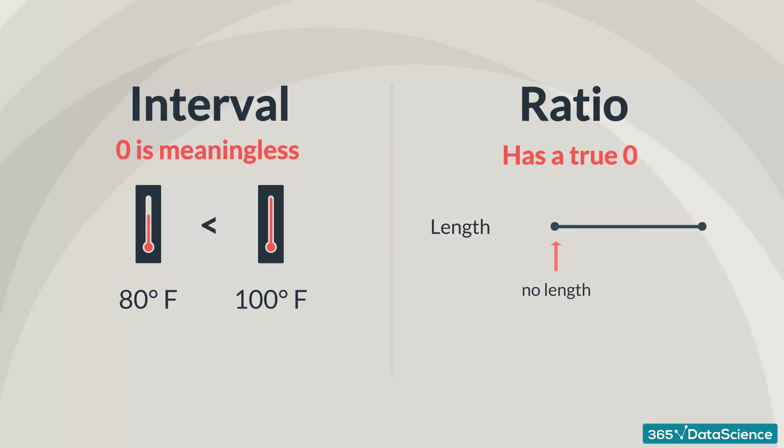Continuing this temperature example, there is another scale: Kelvins. According to it, the absolute minimum temperature is zero degrees Kelvin. Therefore, if the degrees are stated in Kelvins, the variable will be a ratio.